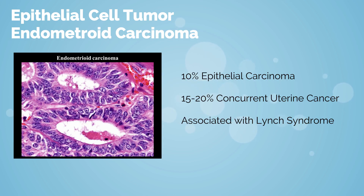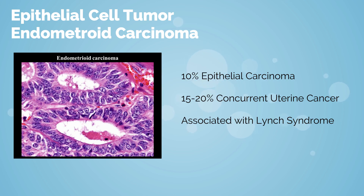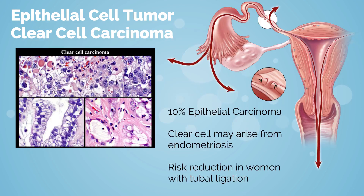About 15 to 20% of patients can have concurrent uterine cancer, and it may be hard to identify the primary. This type is most commonly associated with Lynch syndrome, an autosomal-dominant hereditary colon cancer syndrome often associated with cancers of the endometrium, ovary, gastrointestinal tract, upper urinary tract, brain, and skin.